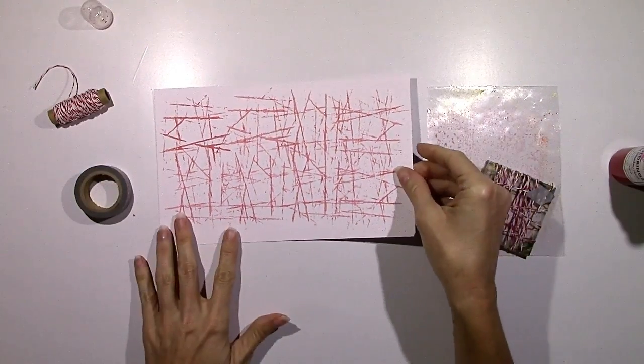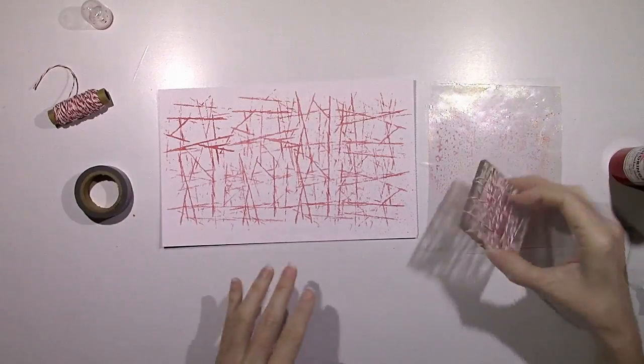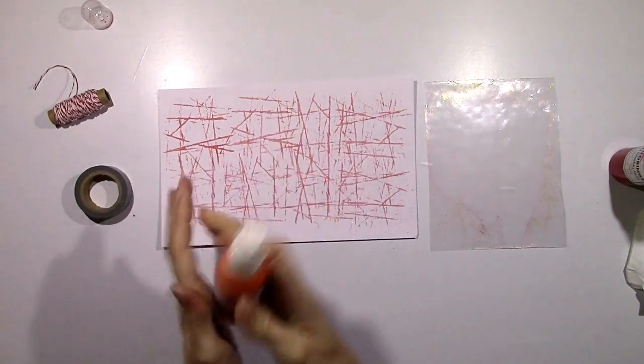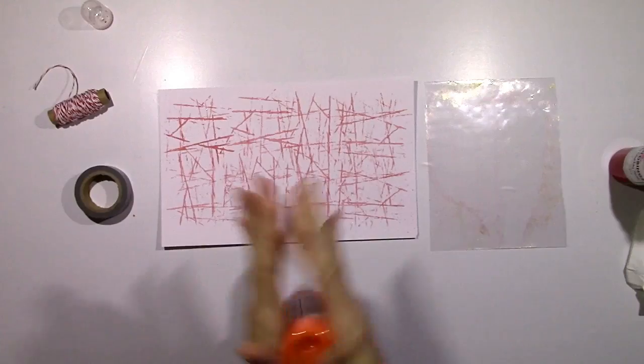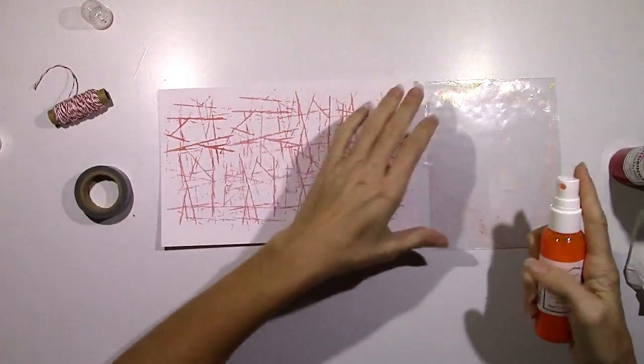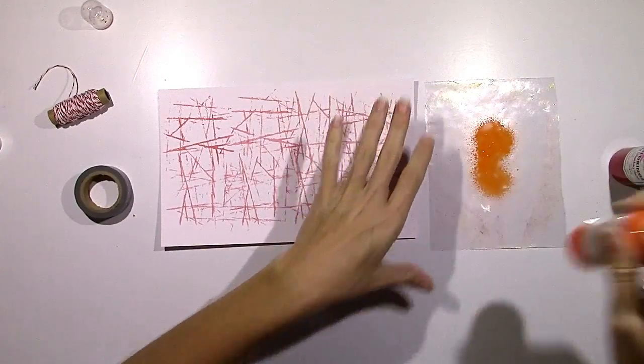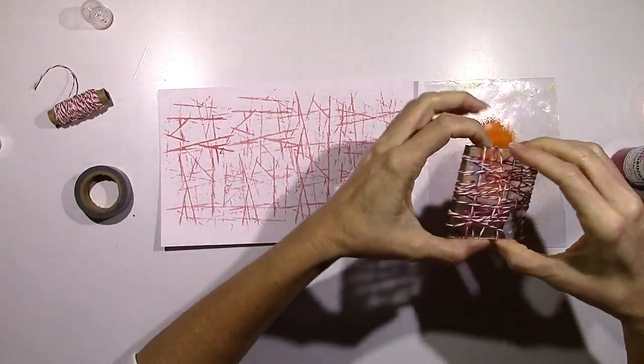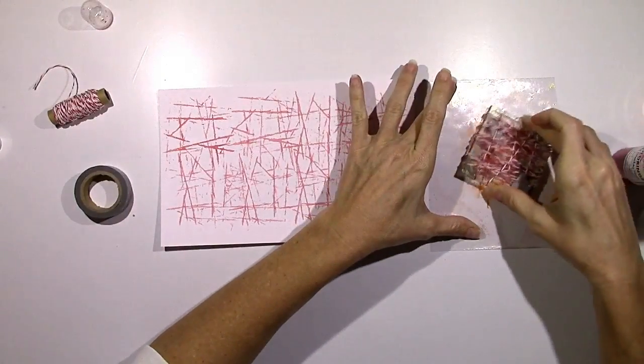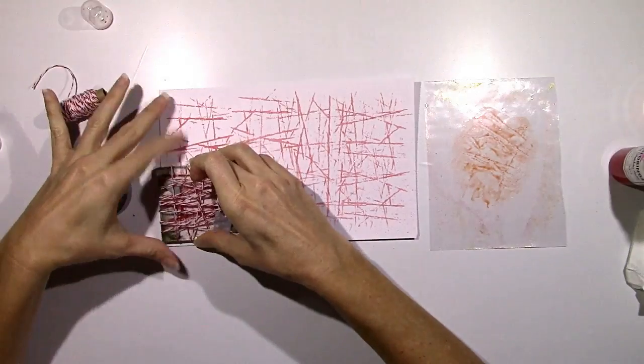You could use this as a background. You could use punches and punch shapes out of it. I thought I would add another color on top of this just to see what it would look like. And this is Colorings in Freshly Squeezed, a beautiful orange color. And I'm going to take the same string and do the same thing over this red color.